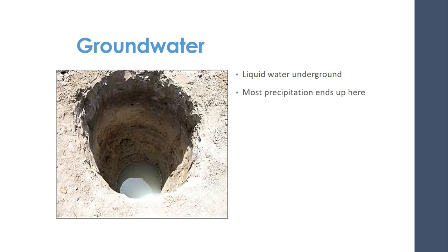Most precipitation actually ends up here underground. Some amount of it flows over land and flows into rivers, but most of it will flow underground and wind up in underground storage. And this is most of the world's liquid freshwater — not including glaciers, which is not liquid.